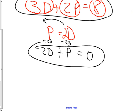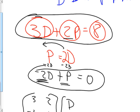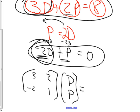The matrix A is [[3, 2], [−2, 1]], the variable matrix is [D, P], and B is [8, 0]. Put that in the calculator and use A⁻¹B to get the answer. Writing the equations correctly is the harder part — once you have that, the calculator does the rest.